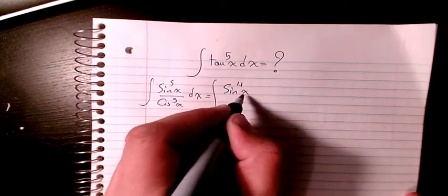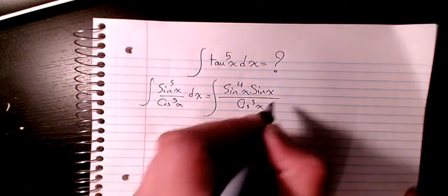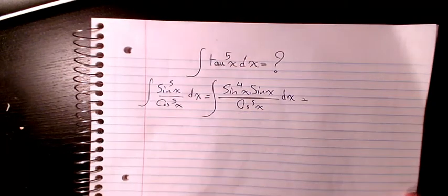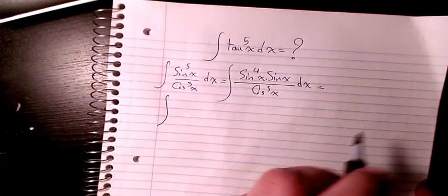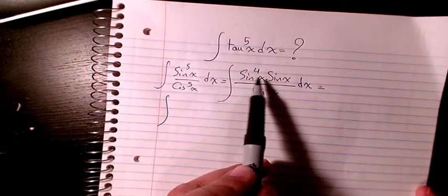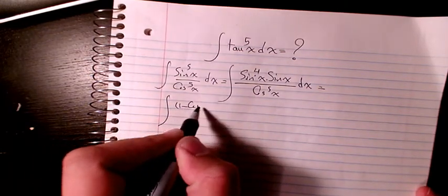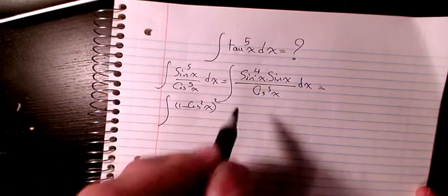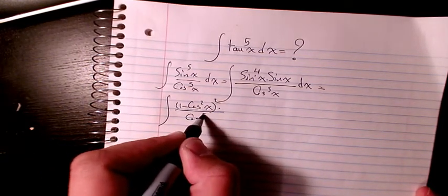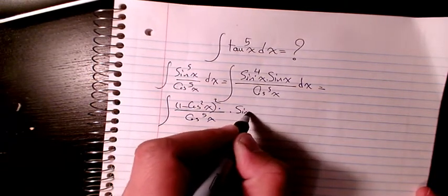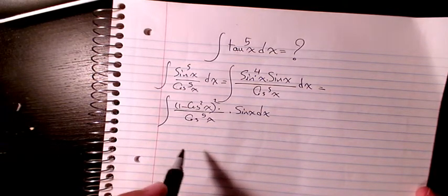For sine to the power of 5 I'm going to make it sine to the power of 4x times sine x divided by cosine to the power of 5x dx. Then I will separate it, and instead of sine to the power of 4 I can write sine squared squared, so it's going to be (1 minus cosine squared x) to the power of 2 divided by cosine to the power of 5x, multiplied by sine x dx.